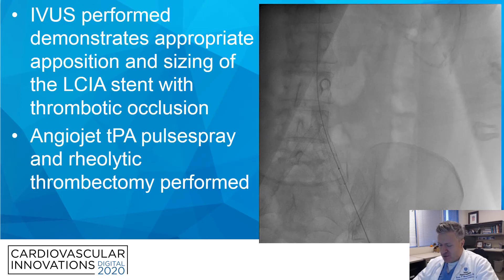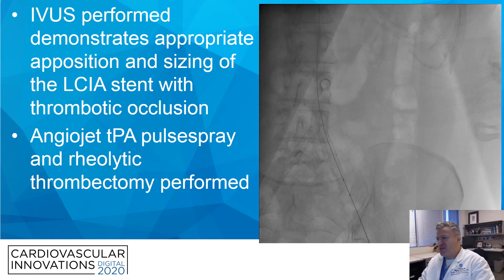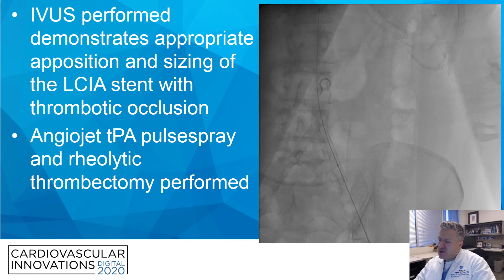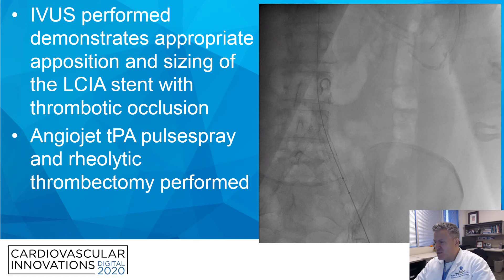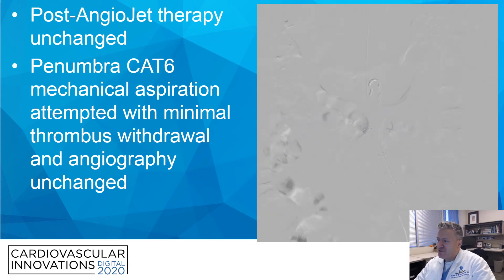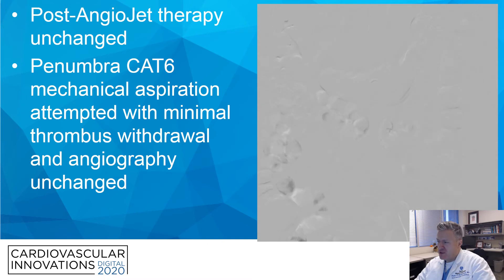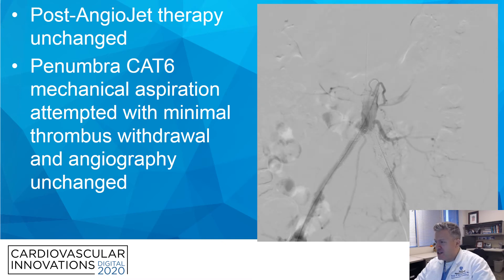As a result, IVUS was performed, which demonstrated no issues with the stent — good apposition, good expansion, no evidence of stent fracture on fluoroscopy. Initially, AngioJet pulse spray with infusion of 15 milligrams of TPA in a 20-minute dwell was performed. Rheolytic thrombectomy was then performed with multiple passes to attempt removal. Angiography after demonstrated no difference — no clot was broken up, no clot was removed. Penumbra CAT-6 mechanical aspiration was then attempted with minimal thrombus removal and no change to angiography.